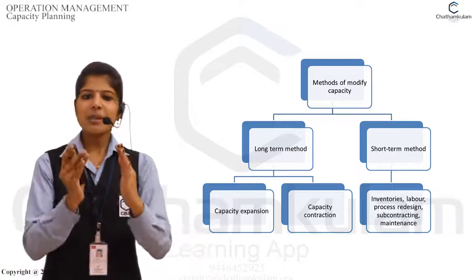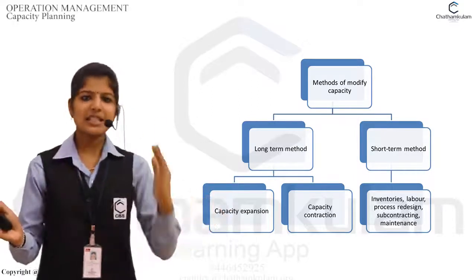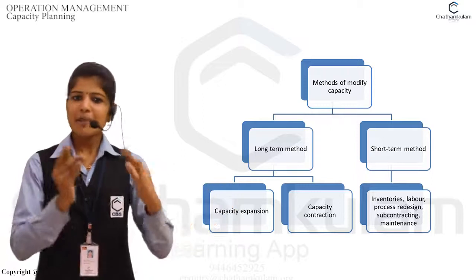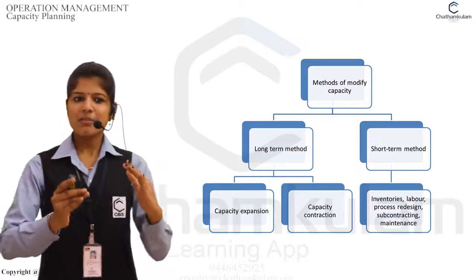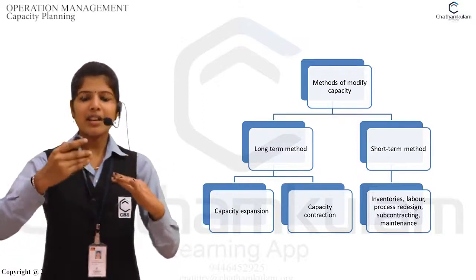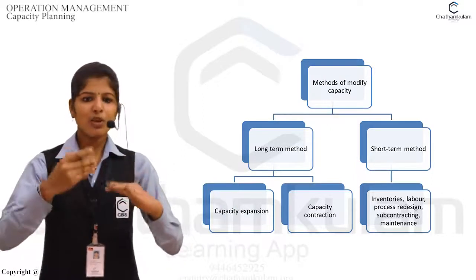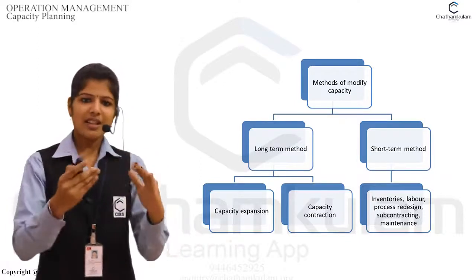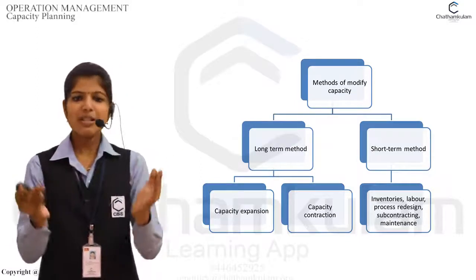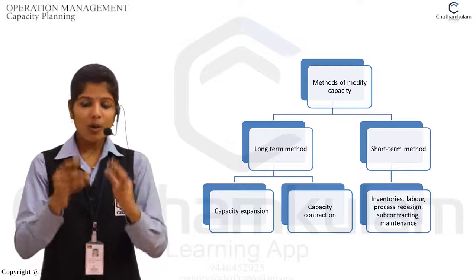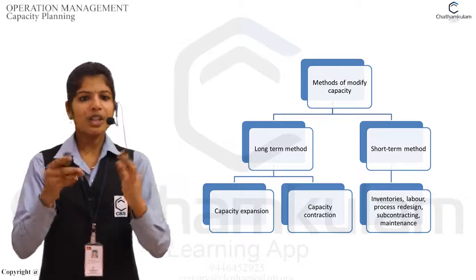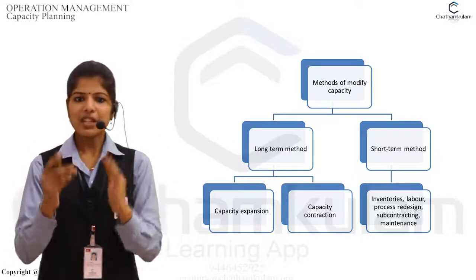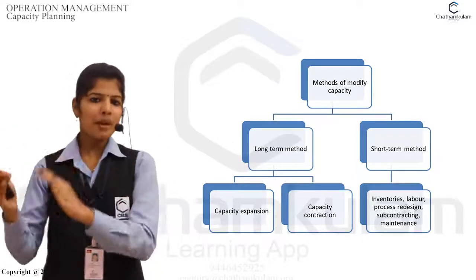The long-term methods are again classified into two categories: capacity expansion and capacity contraction. Capacity expansion means developing the overall facility and increasing overall capacity utilization. Capacity contraction means simplifying or reducing the usage of capacity.